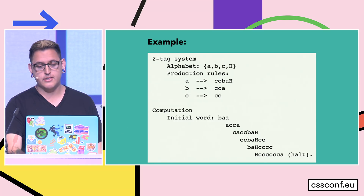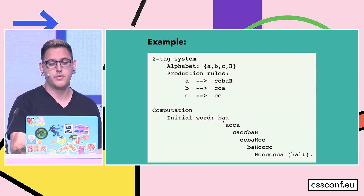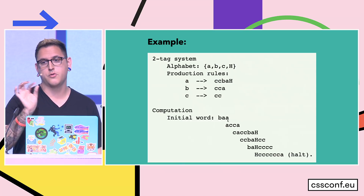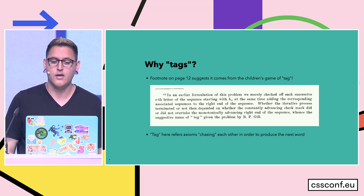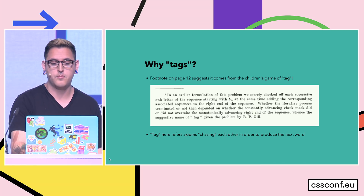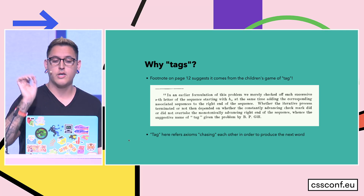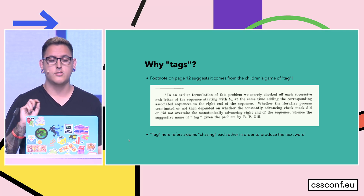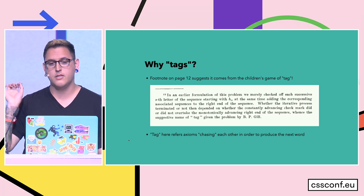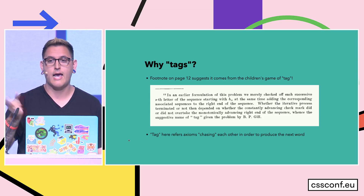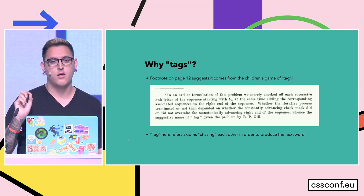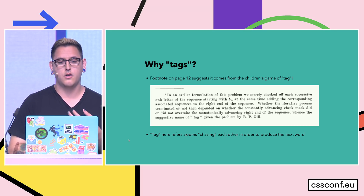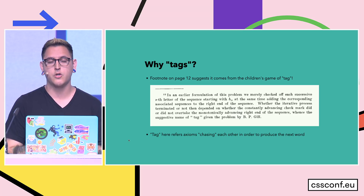If we look at this sequence, not only does it look like a little stack, but the ends of each successive word are sort of chasing each other. In fact, there is a footnote from that original paper — footnote 12 — where Post credits BP Gill with noting that the axioms look like they're chasing each other, and so Gill suggested the name 'tag.' In this usage, Post would have called this a tag operation. While this usage is slightly different, it's probably fair to say that Emil Post's work was really well received during his time, and it would go on to influence language designers in the preceding decades.